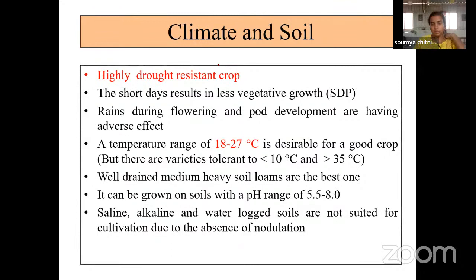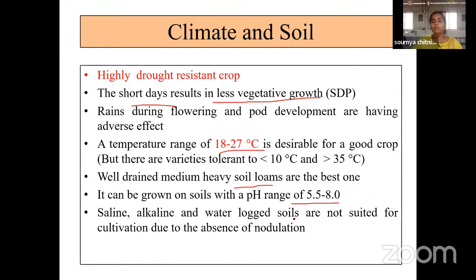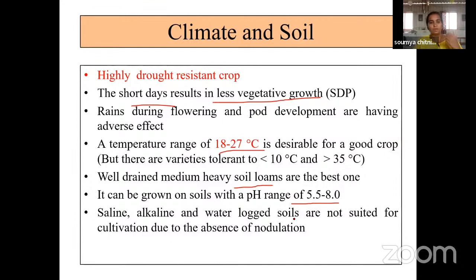Since it is a short-day plant, it results in less vegetative growth. Rains during flowering and pod development have an adverse effect. The temperature range of 18 to 27 degrees Celsius is desirable. Well-drained medium-to-heavy loam soils are best for pigeon pea, with a pH range of 5.5 to 8. Saline, alkaline, and waterlogged soils are not suitable as they affect nodulation.